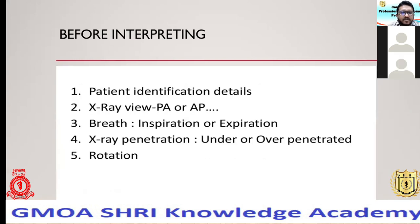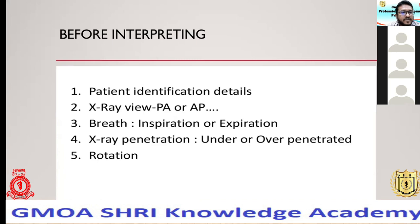Before interpreting any chest X-ray, you need some basic ideas. First, identify the correct patient — patient details and identification are most important. View it on a well-illuminated illuminator rather than holding it up to ceiling light, which will lead you into trouble. Always recognize whether it's a PA or AP view, which is very important especially when interpreting heart size. Check whether it's adequately exposed, with adequate inspiration or expiration, and whether it's rotated or not.